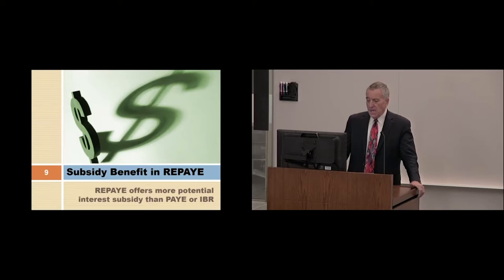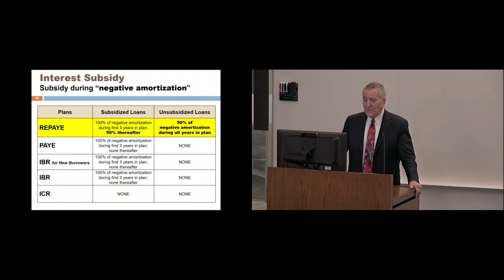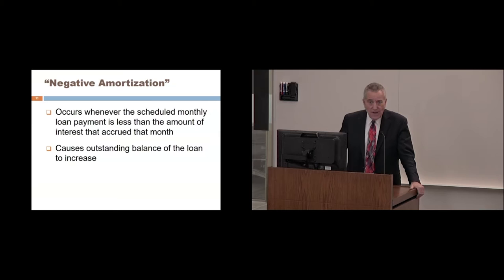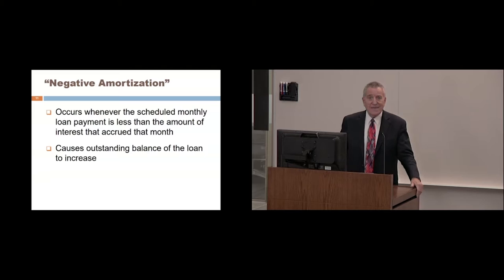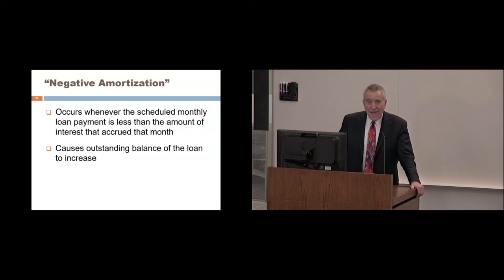So what is this subsidy benefit in REPAYE? REPAYE offers more potential interest subsidy than PAYE or IBR. The interest subsidy occurs during periods of negative amortization. Negative amortization occurs whenever the scheduled monthly loan payment is less than the amount of interest that accrued on the loan that month. Normally under federal credit laws, this isn't allowed — the only form of debt where negative amortization is permitted is federal student loans, and only when using income-driven repayment plans. With the standard, graduated, or extended payment plans, negative amortization isn't permitted. It's only permitted with income-driven plans because your payment is based on your ability to repay, and given your income and debt level, you may not be able to afford all the accruing interest.